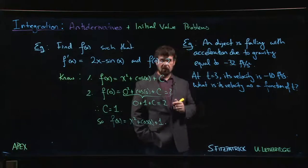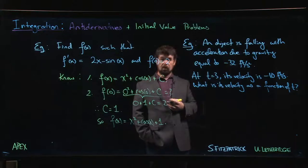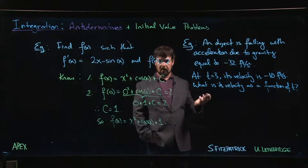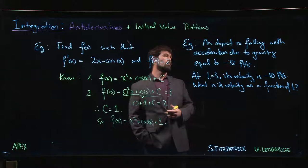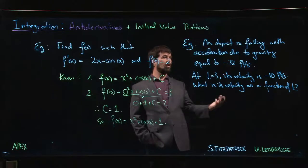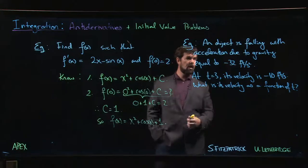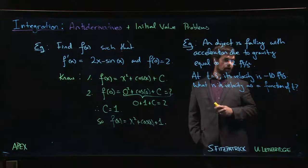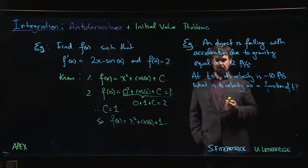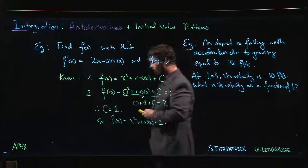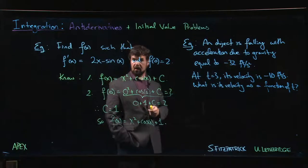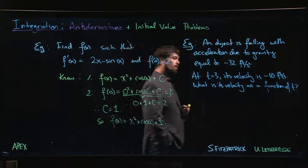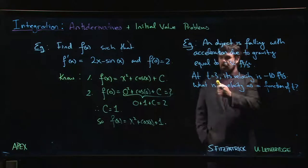Here's a typical applied problem you might have seen even in a high school physics course. You have some object that's falling, acceleration due to gravity minus 32 feet per second squared, unless you're in Canada or any physics class where they use metric, then you might be going with minus 9.8 meters per second squared.